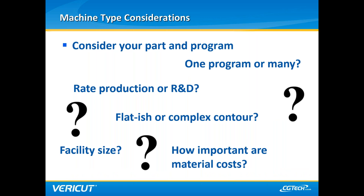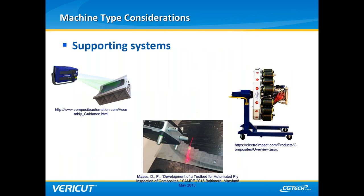Unfortunately, there's no one-size-fits-all for ACM — everything is dependent on your program, your part, and your situation. Careful consideration of each relevant question is necessary to accurately determine the benefits you may realize. Consideration should be given to reducing inspection time through supporting systems like laser projectors, scanning profilometers, part rotators, and head changing stands. The impact these systems have on the overall reduction in production time is drastic, and management should be encouraged to pursue their value.